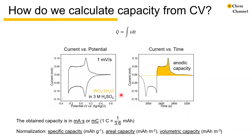We also normalize our capacity by mass, area, or volume depending on the applications. After we obtain the capacity values, we can compare them to other materials or systems. We can also evaluate the time scale at which a material can effectively store charge by comparing capacities across a range of charge-discharge times. We can also calculate the Coulombic efficiency by comparing anodic capacity to cathodic capacity, which can help us identify any parasitic reactions involving the system.